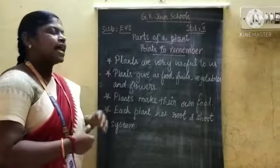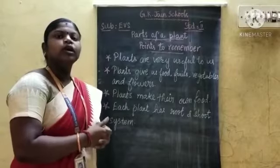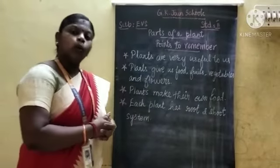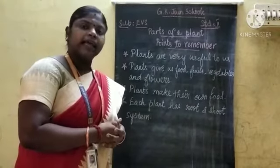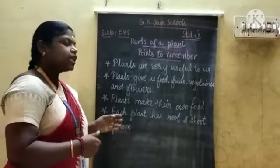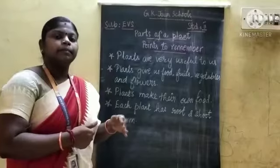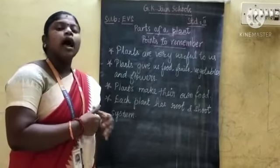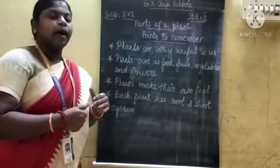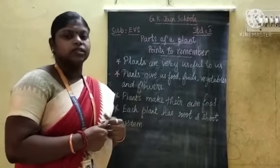Points to remember: Plants are very useful to us. They give us food, fruits, vegetables and flowers. Plants make their own food with the help of sunlight. They need water, air and sunlight to grow. Each plant has a root system and a shoot system. The root system is the part of a plant which grows below the soil. The shoot system is the part which grows above the ground.